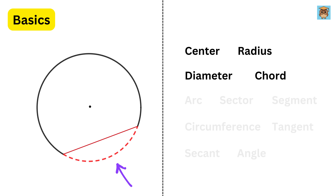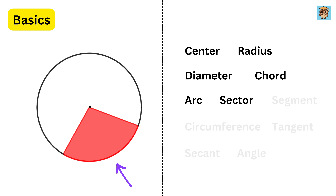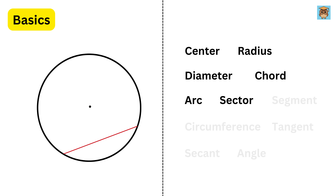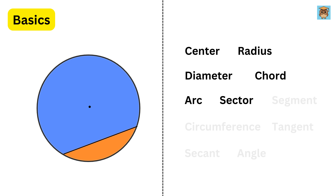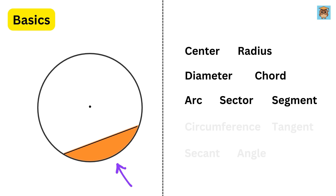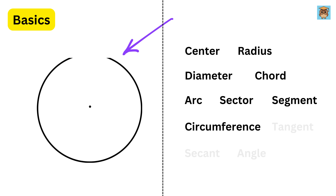A curved part of the circle between two points is known as an arc, while a sector is the region or area between two radii and an arc. If a chord divides the circle into two regions, each region is called a segment. The circumference of a circle is the total length of its boundary, or perimeter of a circle.